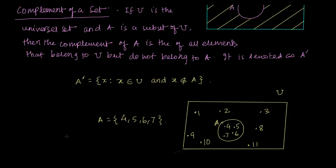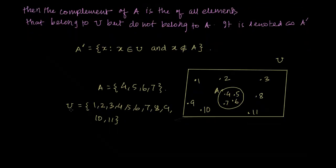To find the complement, you should also know what the universal set is. The universal set is 1, 2, 3, 4, 5, 6, 7, 8, 9, 10, 11. So the complement is everything that belongs to U but does not belong to A. Graphically, it is everything that lies outside of A, so A complement becomes 1, 2, 3, 8, 9, 10, 11.